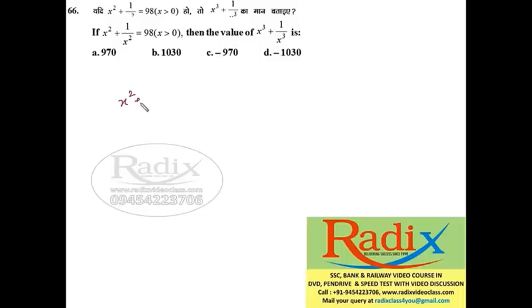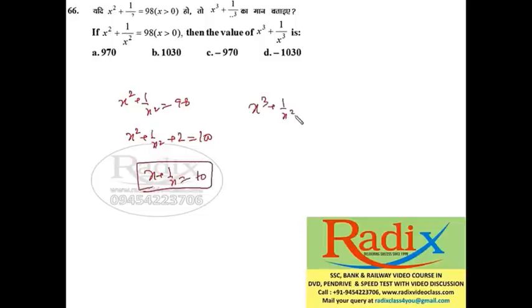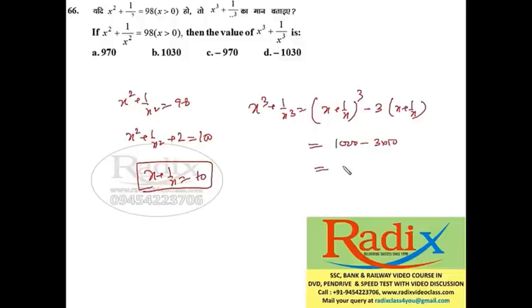Question 66: Given x² + 1/x² = 98, find x³ + 1/x³. Adding 2: (x + 1/x)² = 100, so x + 1/x = 10. Then x³ + 1/x³ = (x + 1/x)³ − 3(x + 1/x) = 10³ − 3·10 = 1000 − 30 = 970. Answer is option A.